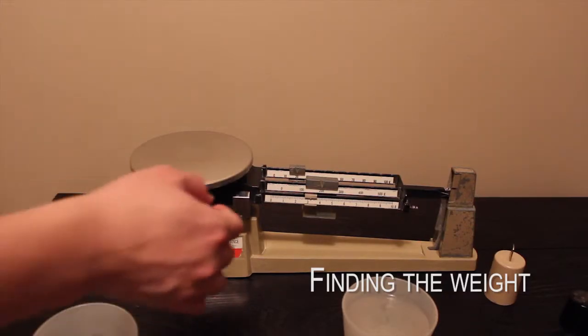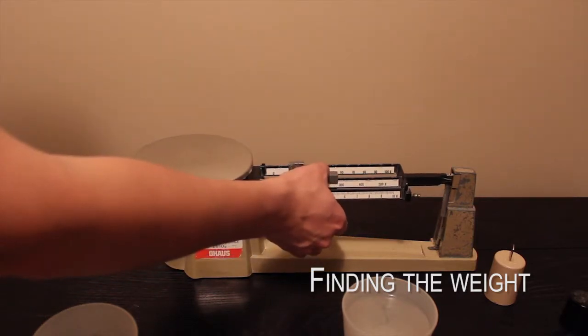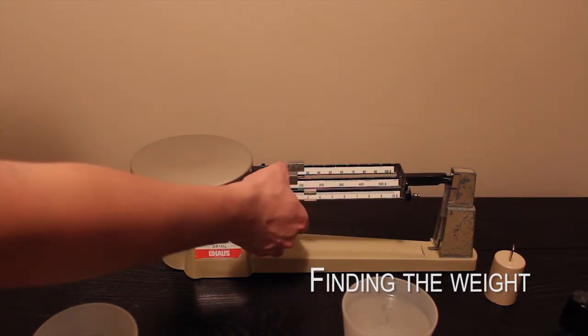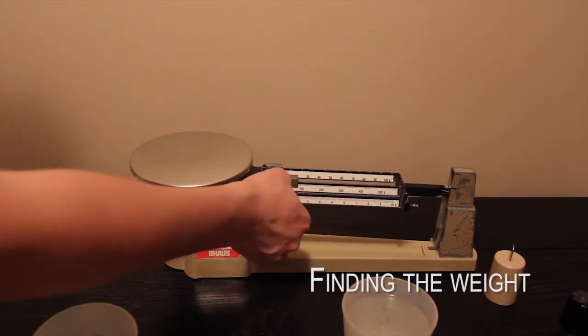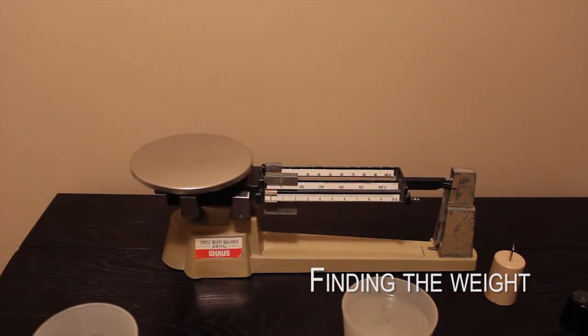Demonstrating an example, we will measure how much the cup of water weighs. The first thing is to move all weights to the left to zero out the scale. The balance pointer will reach the middle point.